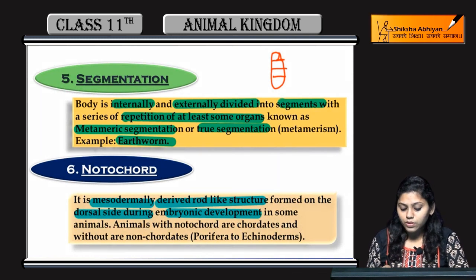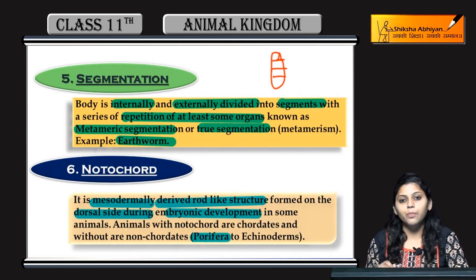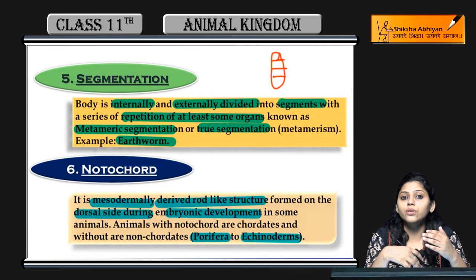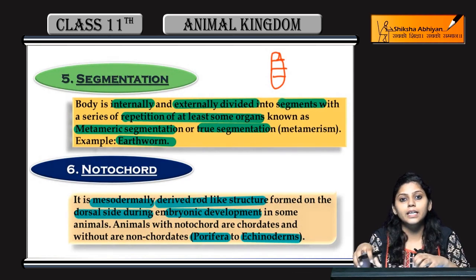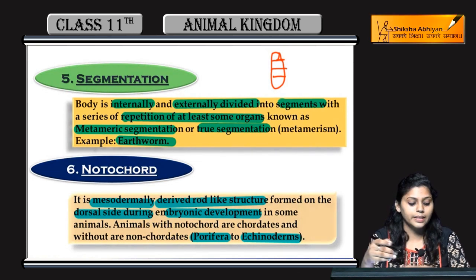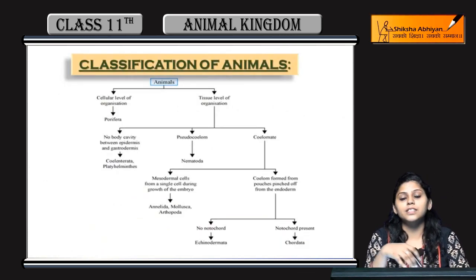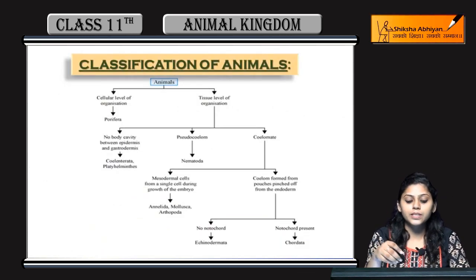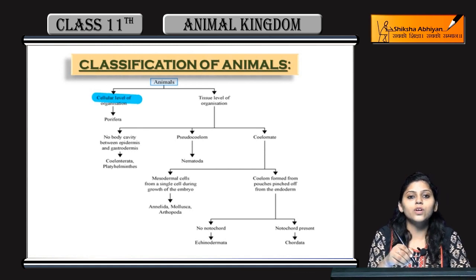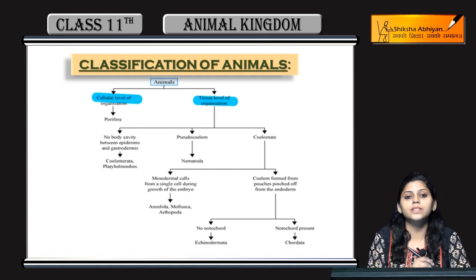Non-chordates are those from Porifera to Echinoderms — all of these are non-chordates. Besides these, all others are chordates. In the classification of animals, we saw cellular level of organization and tissue level of organization.